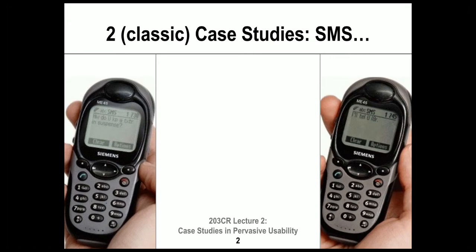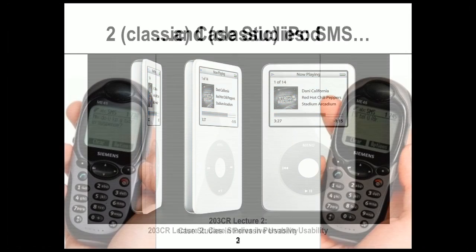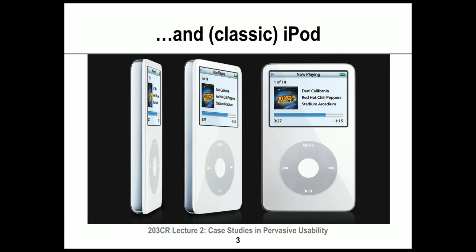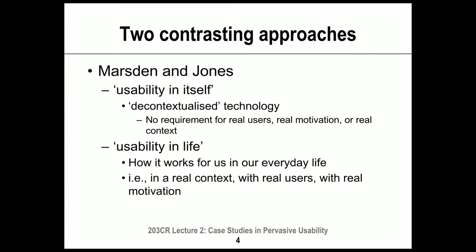We're going to look first at SMS, a texting protocol that is still used, although it's not as ubiquitous as it used to be. We can see here a pretty old phone that supports SMS with text abbreviations. The second thing we're going to look at is the classic iPod and its usability.